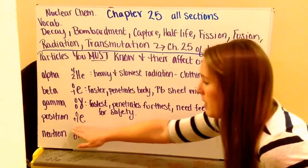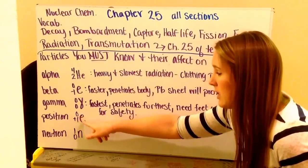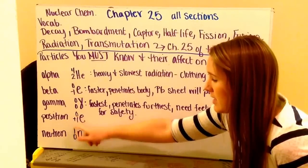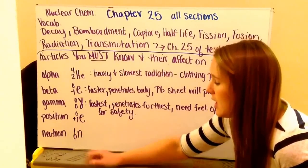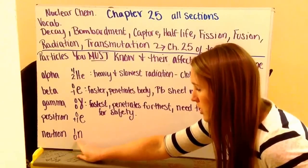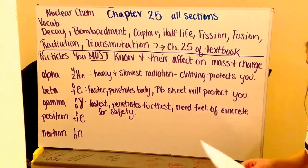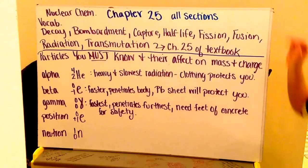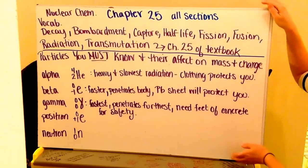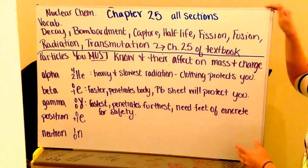Two other particles. We have a positron. This is abbreviated as a positive electron. Again, it does not have any mass and has a positive one charge. And then we have our neutron which has mass to it but no charge and abbreviated as a lowercase n. So again, you must know all of these particles off the top of your head.